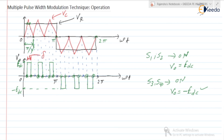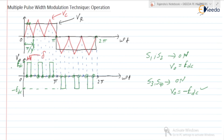This is about the operation of the multiple pulse width modulation technique. In the next video, we are going to derive the expression of V0 and prove how the pulse width and the number of pulses per half cycle can vary the output voltage, because this technique is used for output voltage control of the inverter. Thank you.